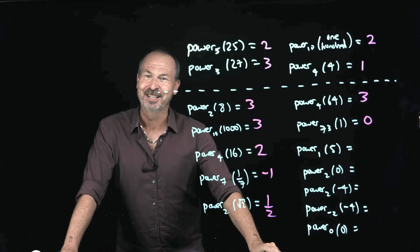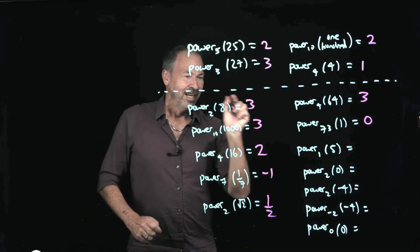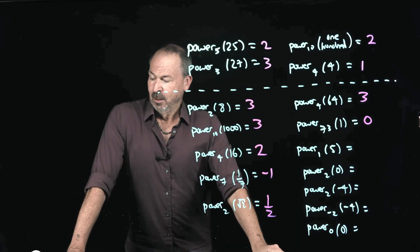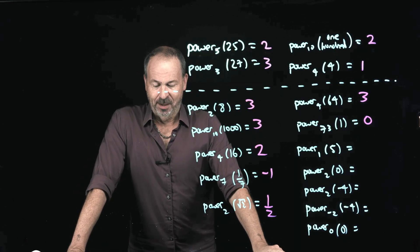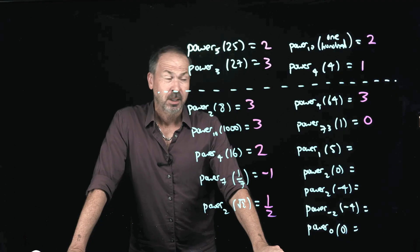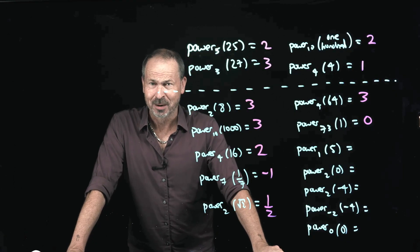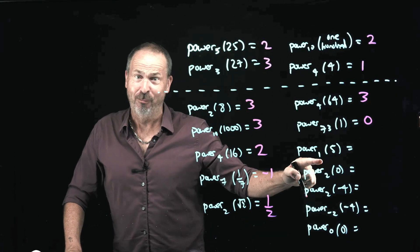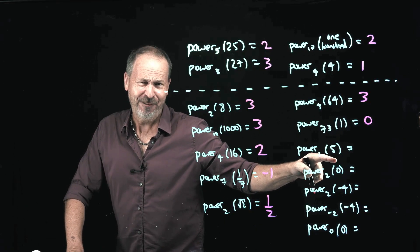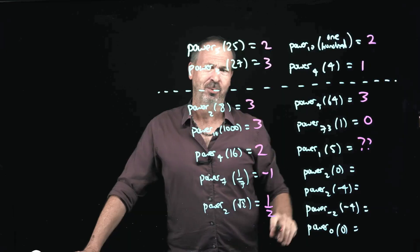The power of 1 that gives the answer 5: 1 squared is 1, 1 cubed is 1, 1 to the 7th is 1. I think every power of 1 is actually going to be 1, not 5. I'll worry about that one — put question marks there.